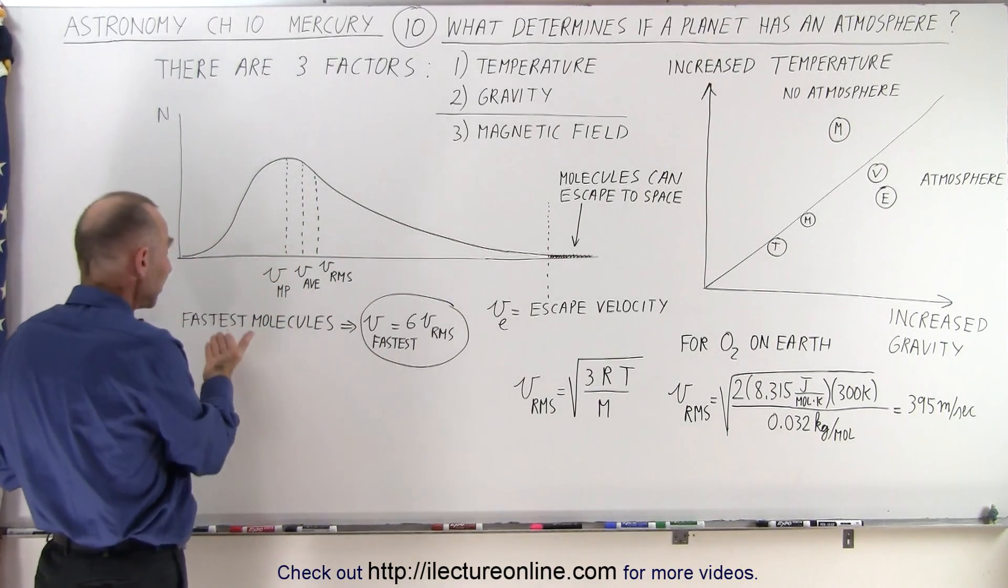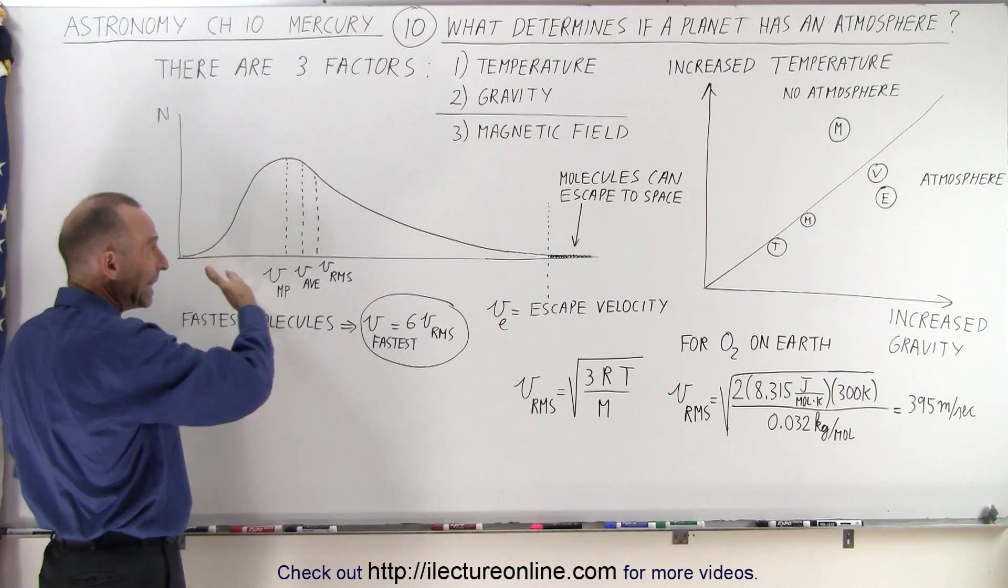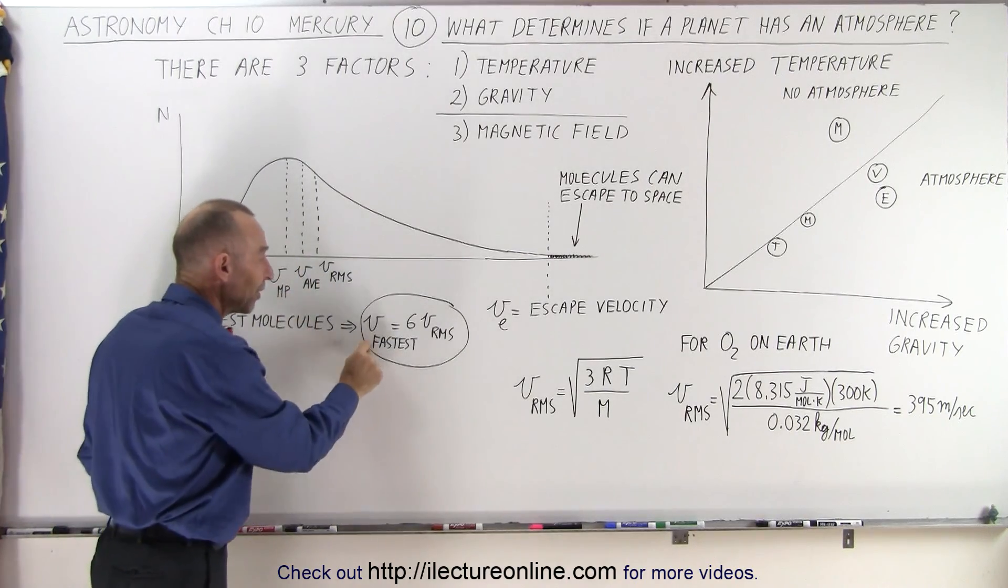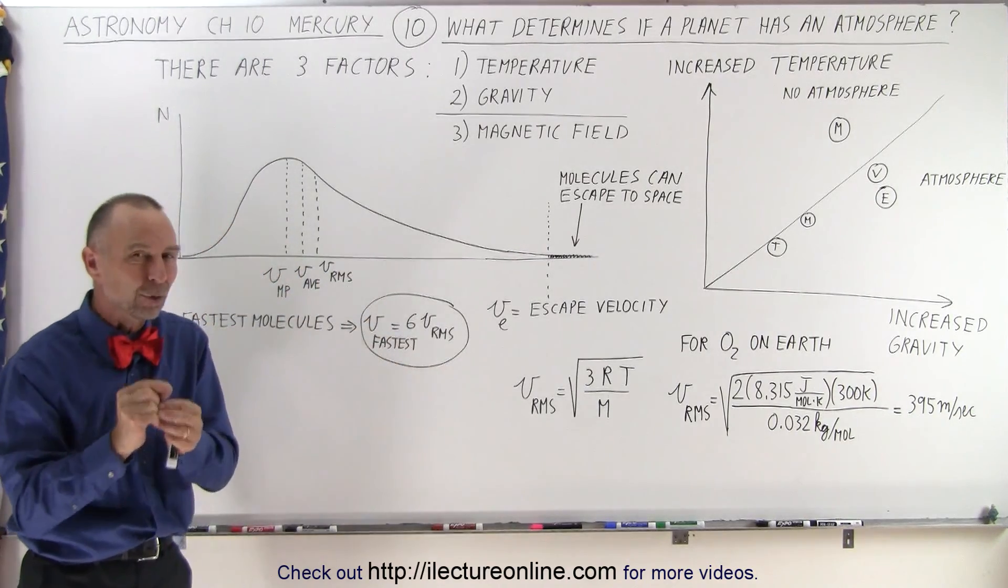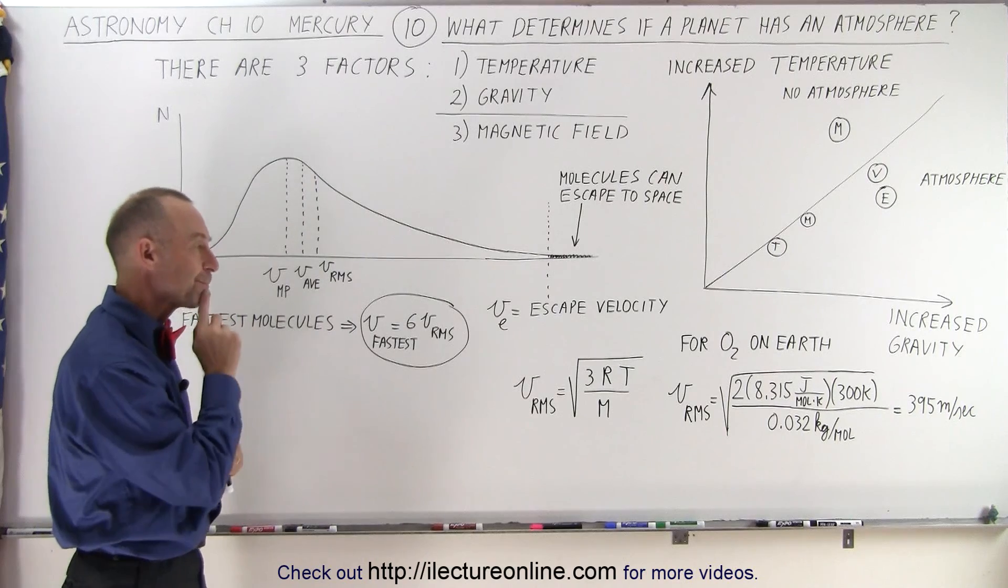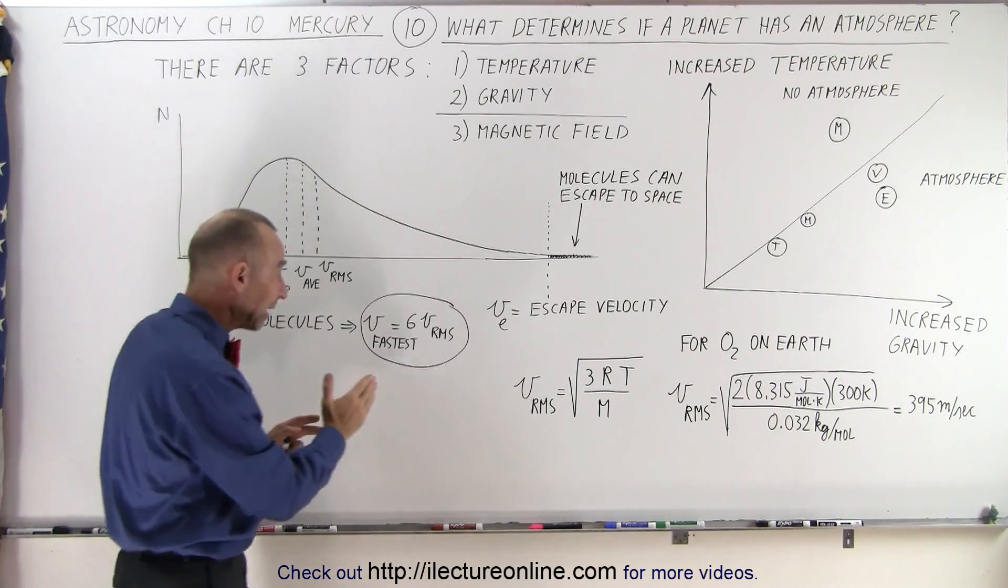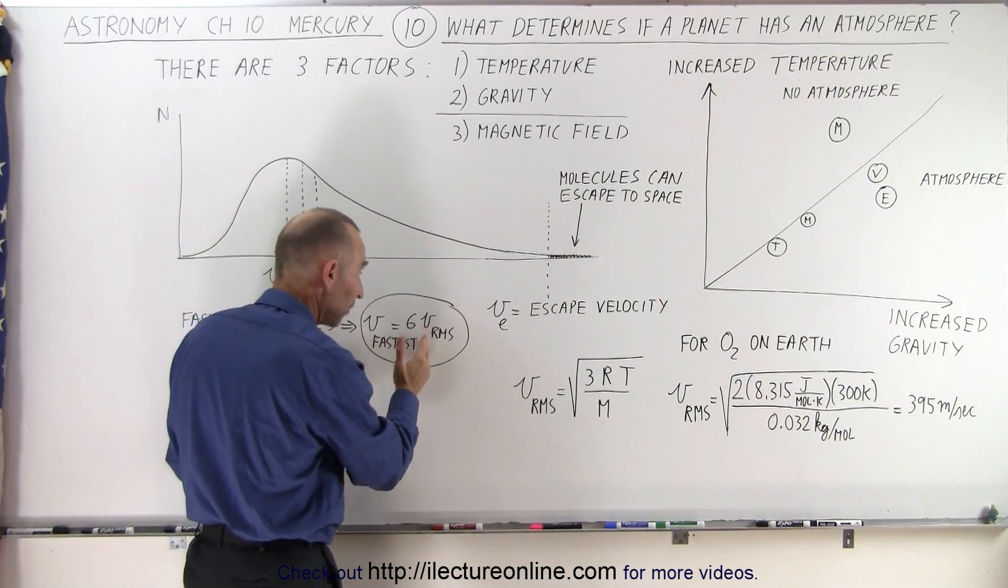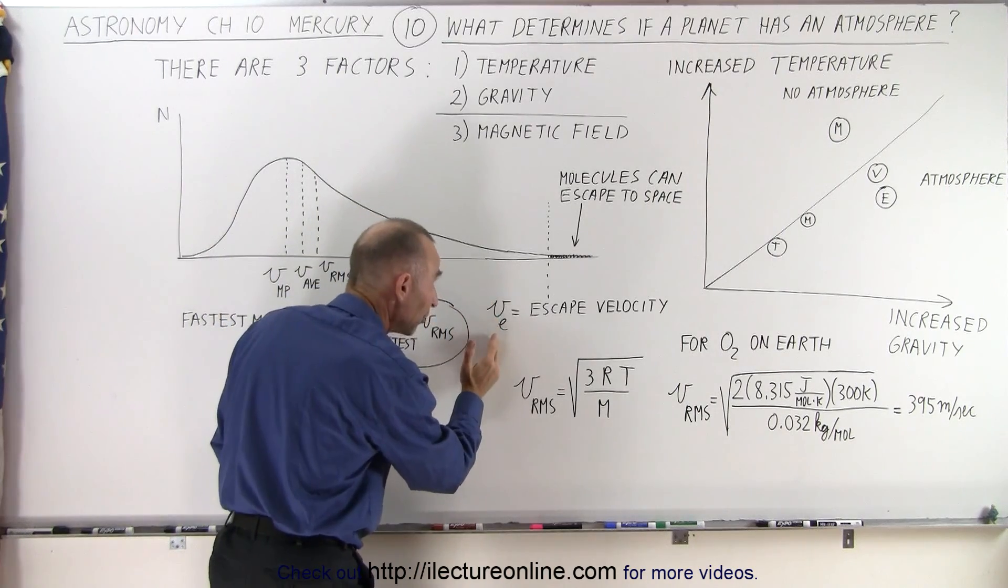So, the rule of thumb is that the fastest molecules in the atmosphere of a planet move at a speed of about six times the root mean square velocity. And if that six times the root mean square velocity is greater than the escape speed, then the molecules can escape.